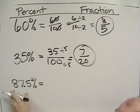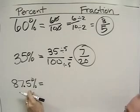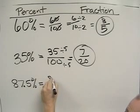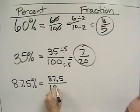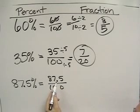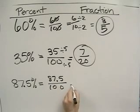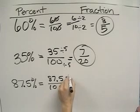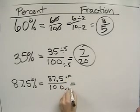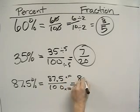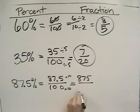And this one's a little bit on the tricky side. 87.5 percent means 87.5 over 100. But now we have a decimal inside of a fraction, so we need to get rid of that decimal. We're going to multiply this by 10, multiply this by 10, and we get 875 over a thousand.